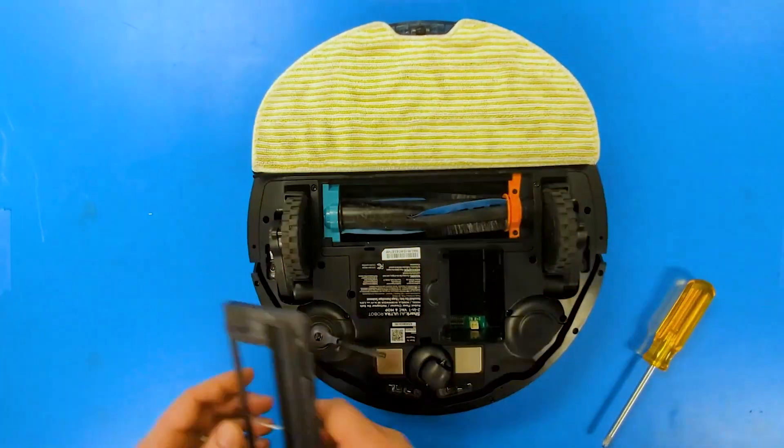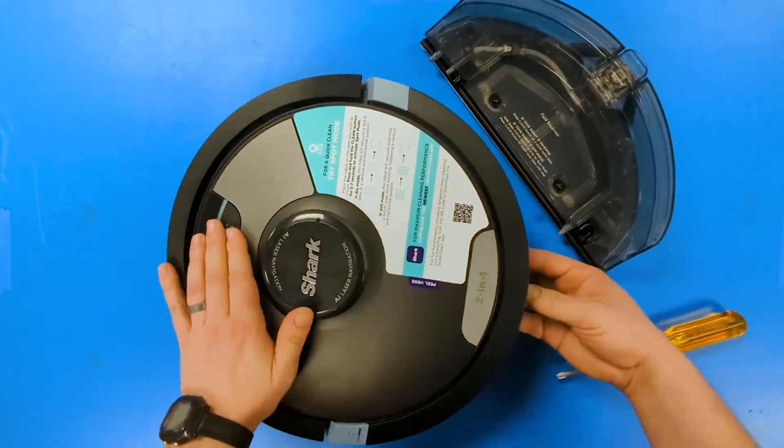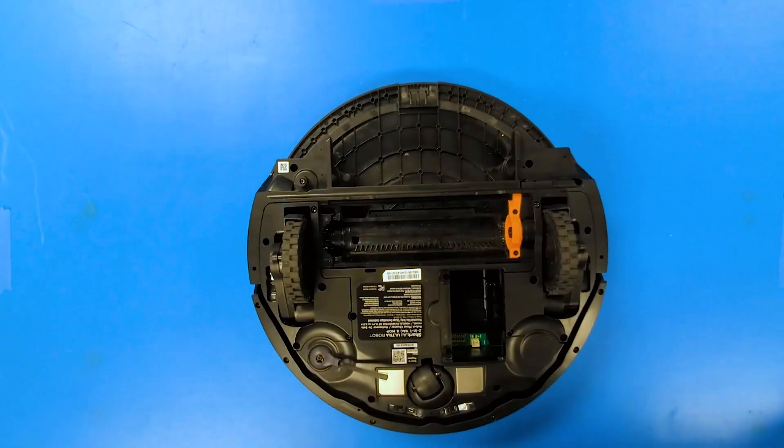We first remove the battery and the roller from their compartments, then remove the dustbin and mop container.